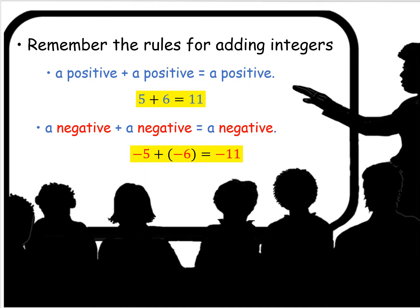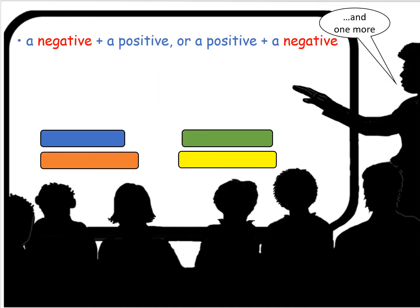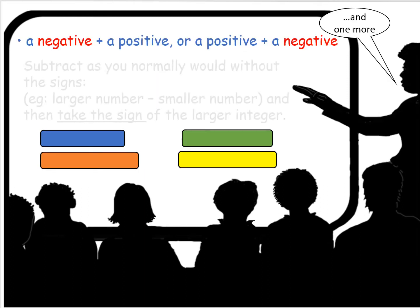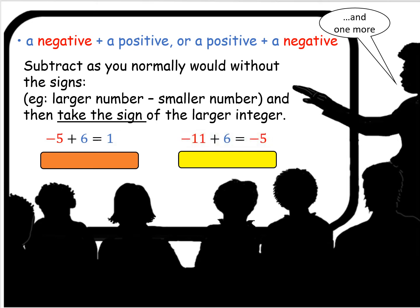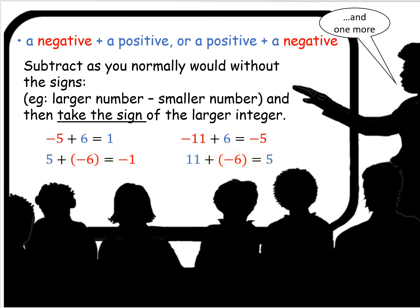And there's one more rule: a negative plus a positive, or a positive plus a negative. You're going to subtract as you normally would without the signs — the larger number minus the smaller number. And then you're going to take the sign of the larger integer. So with negative five plus six, you subtract six minus five and you get one. How do you determine if it's positive or negative?